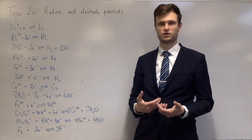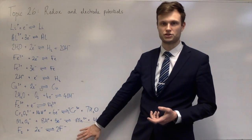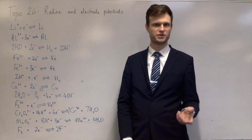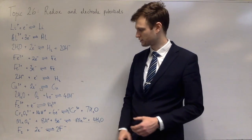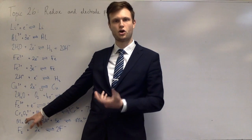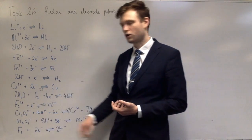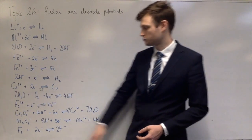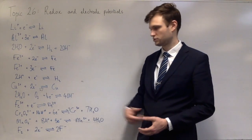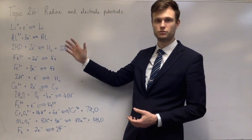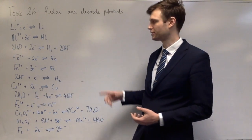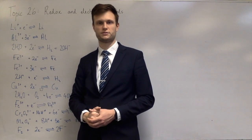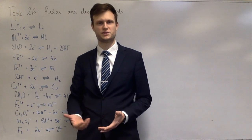A reducing agent is something which reduces other things, and therefore itself is oxidised. At the bottom are the best oxidising agents, because they are the ones most readily reduced, which means they can oxidise other things. You'll recognise dichromate as the oxidising agent used when we oxidised alcohols to carboxylic acids, ketones, and aldehydes in unit 4. Permanganate is a stronger oxidising agent than even dichromate. If you pick any two, you can make a redox equation by combining them so that the one that wants to be reduced is reduced, and the one that wants to be oxidised is oxidised — giving us a kind of reactivity series.